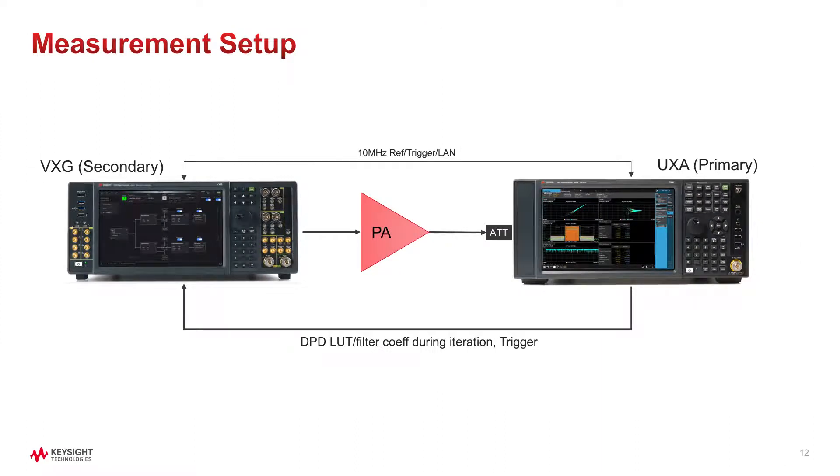Let's look at the measurement setup. We have Keysight VXG vector signal generator delivering modulated signal to PA, and UXA signal analyzer measures output of PA. It's a good practice to insert attenuator to the PA output to prevent damages to the analyzer's input ports with high output power from PA. 10MHz reference output and trigger output from VXG are connected to UXA's respective inputs to establish timing and frequency synchronization. And N7608 EM power amplifier test application controls both of the UXA and VXG.